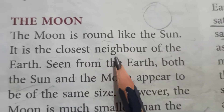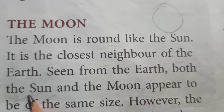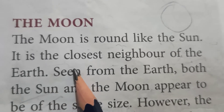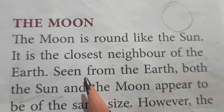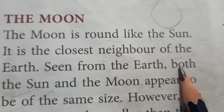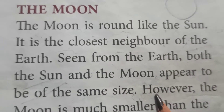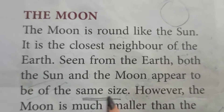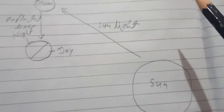Moon is the closest neighbor to the earth. Seen from the earth, both the sun and the moon appear to be the same size. They appear the same size.